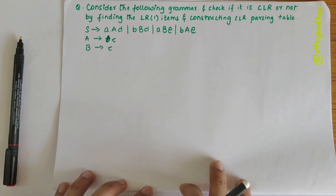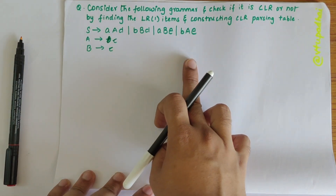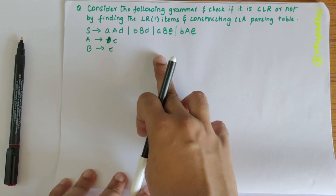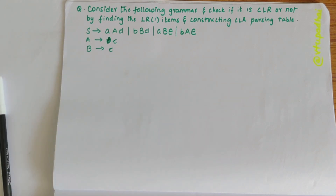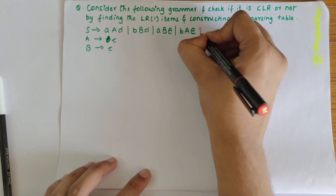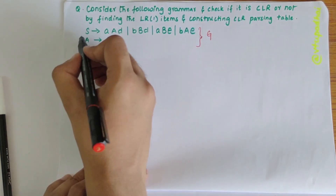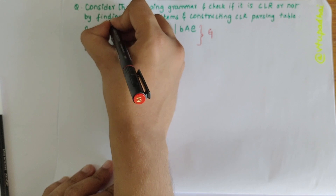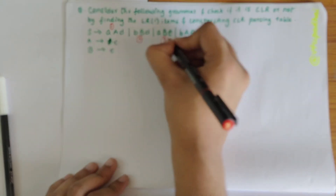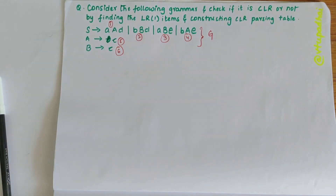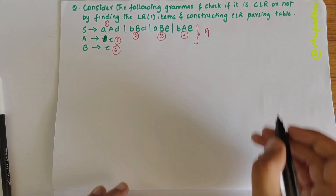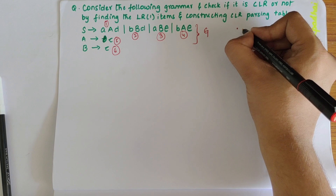In this video, we'll be finding the LR(1) items for the given grammar and check if it is CLR or not by constructing the parsing table. Here, let me start with construction of the augmented grammar from the given grammar. I'll consider this the given grammar as G and I'll number these productions: first, second, third, fourth, fifth, and sixth.